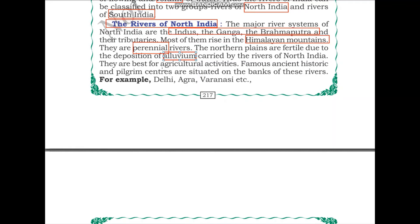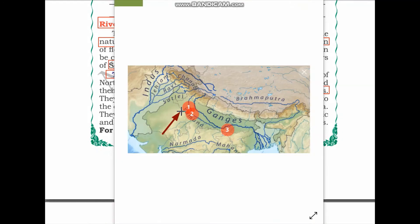These rivers are best suited for agricultural activities. Famous ancient, historic, and pilgrim centers are situated on the banks of these rivers — for example, Delhi, Agra, and Varanasi. As we can see on the map, these cities are very close to the rivers of North India, which is why all these places are very fertile, like the other places in the northern plains.